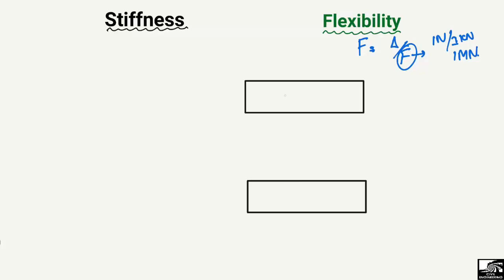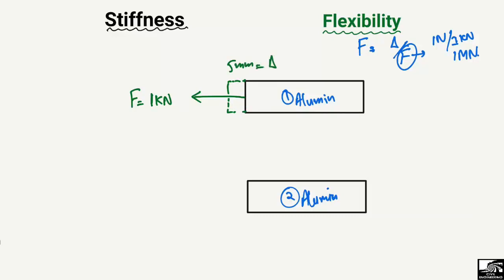Here is the first material made of aluminum, and a second material also of aluminum but with different raw material. For the first material, I apply a load of one kilonewton and it produces a deformation of 5 millimeters. So flexibility f equals delta divided by force, which is 5 millimeter divided by 1 kilonewton, giving a flexibility of 5 millimeter per kilonewton.